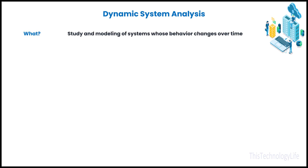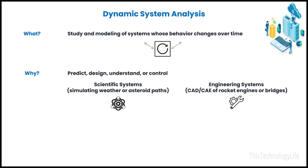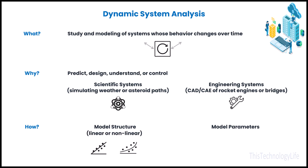Dynamic system analysis is the study and modeling of systems whose behavior changes over time due to both internal and external influences. It is primarily used to predict, design, understand, or control scientific and engineering systems. This is done by creating a model consisting of a model structure and associated parameters. Non-linear models more closely resemble real-world systems that are typically multi-dimensional, noisy, and chaotic, but linear approximations are typically used for easier analysis.